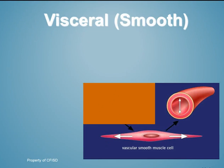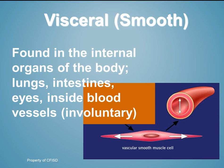Next we have visceral or smooth muscles. Visceral means pertaining to internal organs, so they are found in the internal organs of the body — lungs, intestines, eyes, inside blood vessels. Those are considered visceral muscles. These are also involuntary, meaning you do not readily tell your stomach or intestines to contract and move your food through it. Your brain will just tell those to do it.